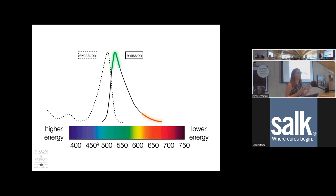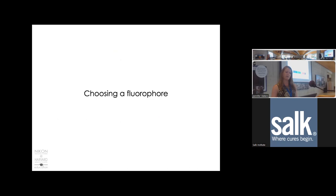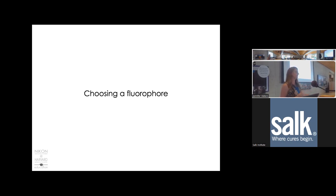All fluorophores have their own excitation and emission spectra that can look vastly different from one another—some have very broad spectra, some have multiple peaks, and some have larger or smaller Stokes shifts. Understanding the spectra of your fluorophore can really help you design your experiments optimally. It's important to consider these aspects of how your fluorophore behaves when choosing one for your experiment.